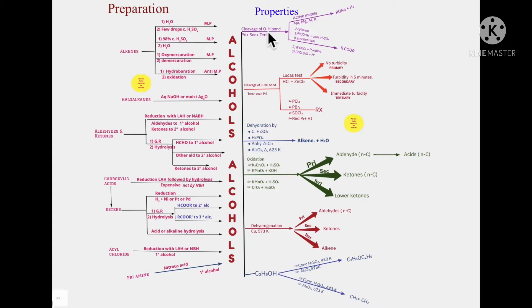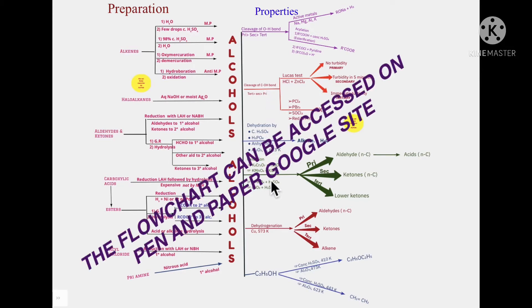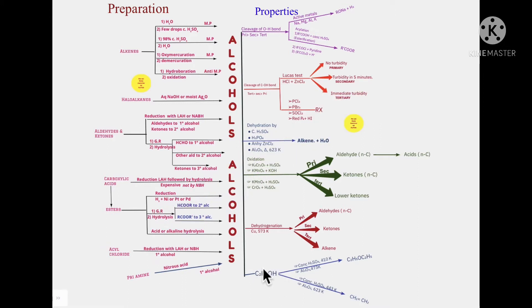We have the breaking of the OH bond, the breaking of the CO bond in alcohols, the reactions of dehydration, oxidation, dehydrogenation, and there is a specific reaction which is characteristic of ethanol. We have got all these reactions in a beautiful flow chart listed over here, and there are a number of colors being used.